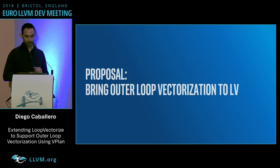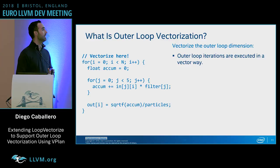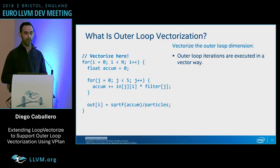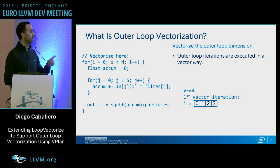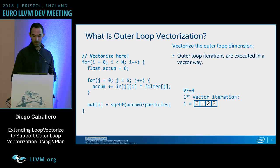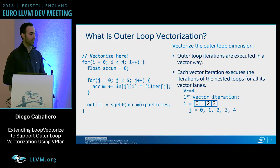Now let's talk about bringing outer loop vectorization to vPlan. Outer loop vectorization is when we vectorize a loop that has other loops inside and the outer loop iterations are executed in a vector way. Imagine we execute the i-loop with VF equal to 4 — the first vector iteration executes i=0,1,2,3 within the same vector. Each vector iteration executes all the iterations of the nested loops — those four lanes execute all iterations of the j-loop.